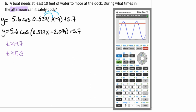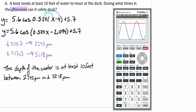We want to know what does that mean time-wise. About 14 hours gives us approximately 2.42 p.m., and 17.3 hours is approximately 5.18 p.m. We can see that the depth of the water is at least 10 feet between 2.42 p.m. and 5.18 p.m. when we're looking for our afternoon times that our boat can safely dock.